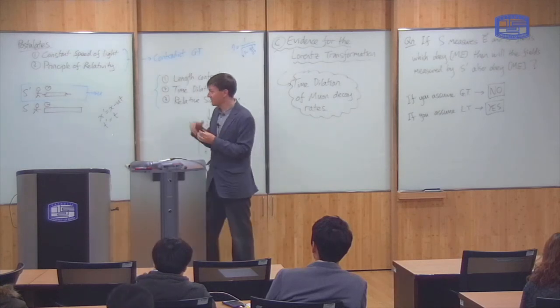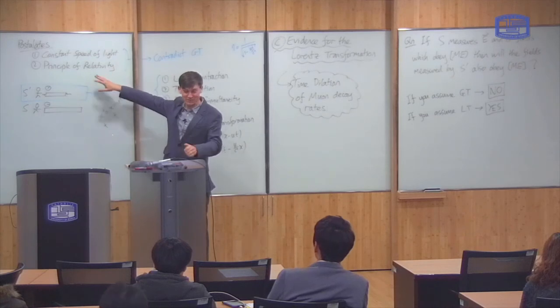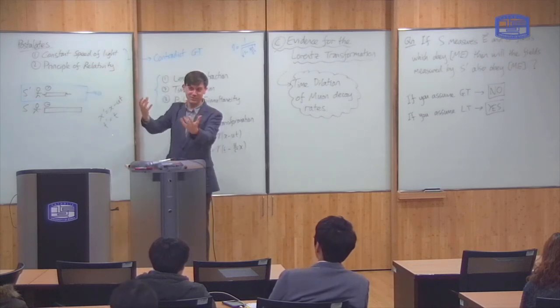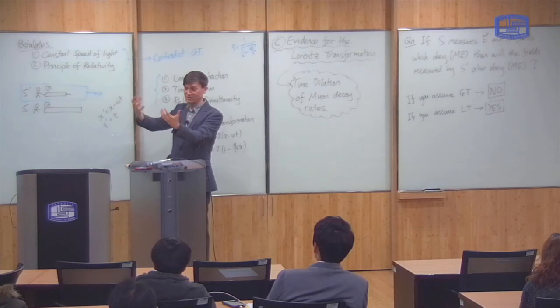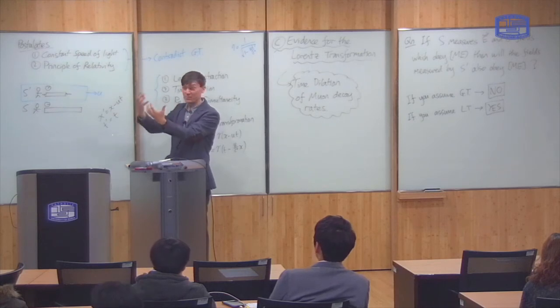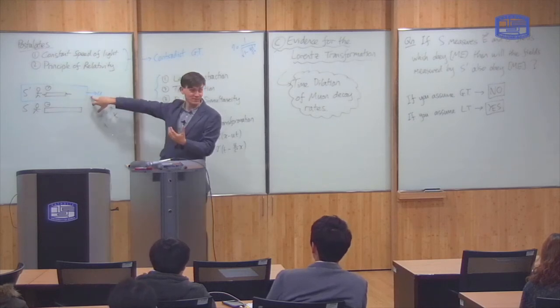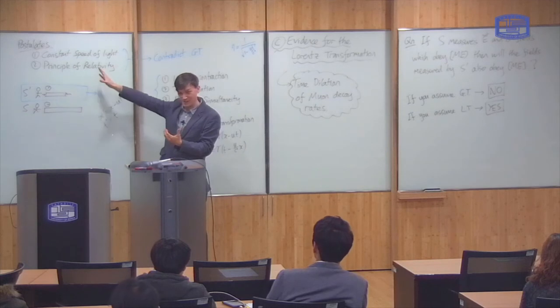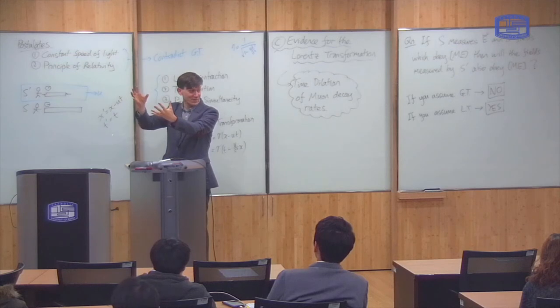And actually, this is required by the principle of relativity. Because if some things slowed down and some things didn't, then by looking at the difference between the two, you would be able to tell that you're moving. And the principle of relativity says you can't tell you're moving. So therefore, if one process slows down, all of the processes slow down.